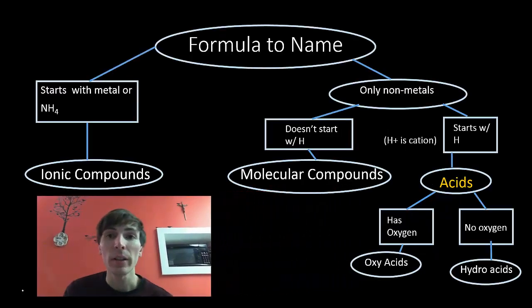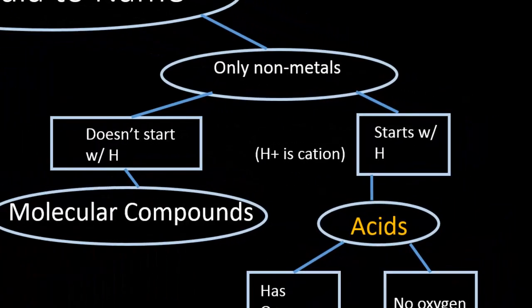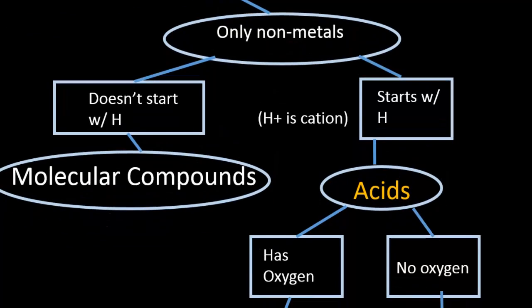So the first thing we need to realize is that acids are always going to be containing only nonmetals. They always start with H. H at the beginning is saying that H plus is the cation. And the acids come in two flavors.